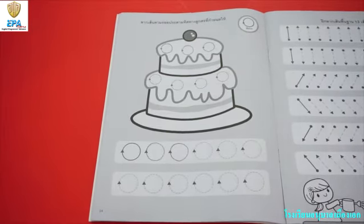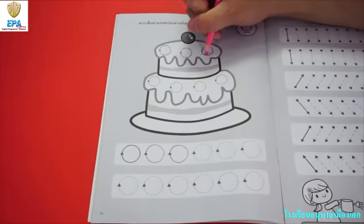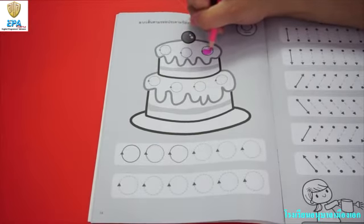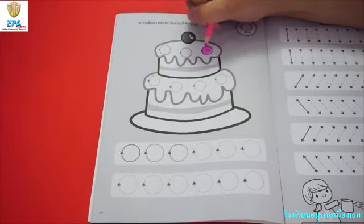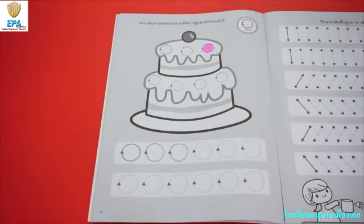Once you're done, you can bring out your crayons and colored pencils as you are going to color the cake. I will use pink on this picture. You can use your favorite color as you are going to color the picture. Once you're done with this pattern, we are going to go to page number 15.